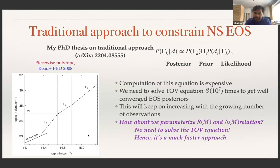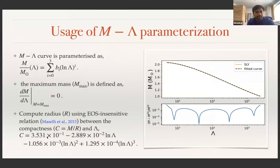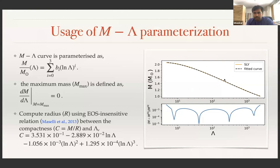We parameterize the mass as a function of log lambda, giving four free parameters in our model: B0, B1, B2, B3. An example is shown on the right where the SLY equation of state is plotted along with the corresponding fitted curve. The error in fitting is shown as a function of lambda, and it is always less than 1%. Since this curve is also a monotonically increasing function, we can differentiate mass with respect to lambda, and setting the derivative to zero gives the maximum mass.